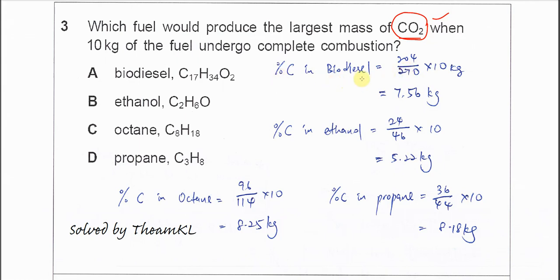For carbon in biodiesel, you use the mass of carbon, 12 times 17, over the molar mass of the molecule, times 10 kg. This is the mass fraction - the mass of carbon over the total mass of the molecule.